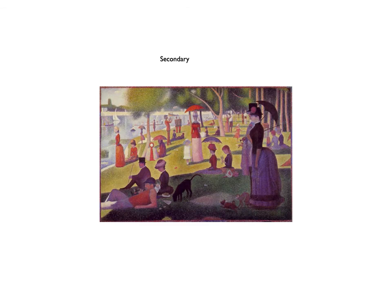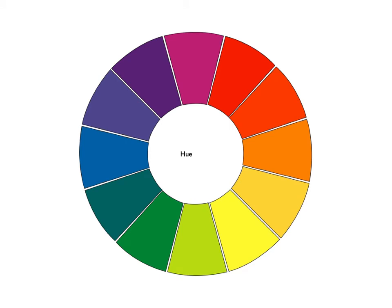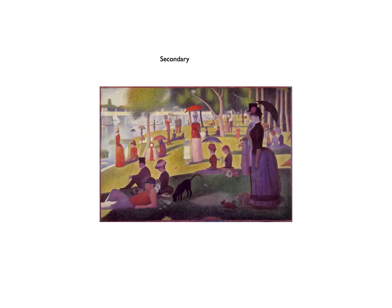Another color category we have is called secondary colors. Secondary colors are when you mix red and yellow together to get orange, yellow and blue together to get green, and red and blue to get purple or violet. Those are perfectly spaced in between the primary colors on the color wheel.